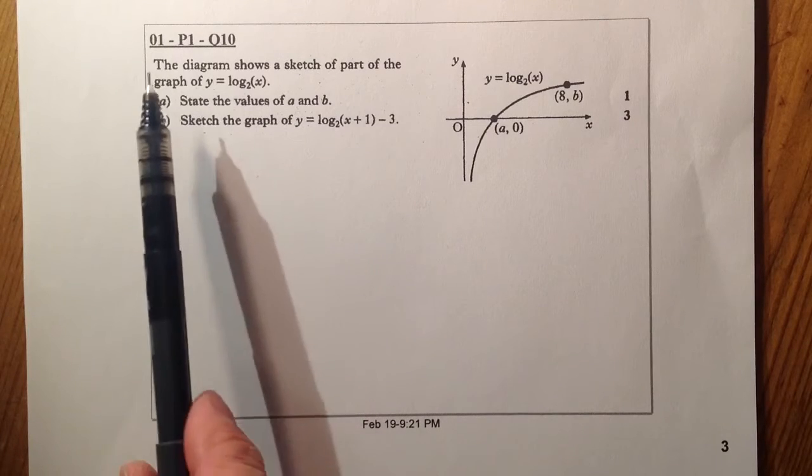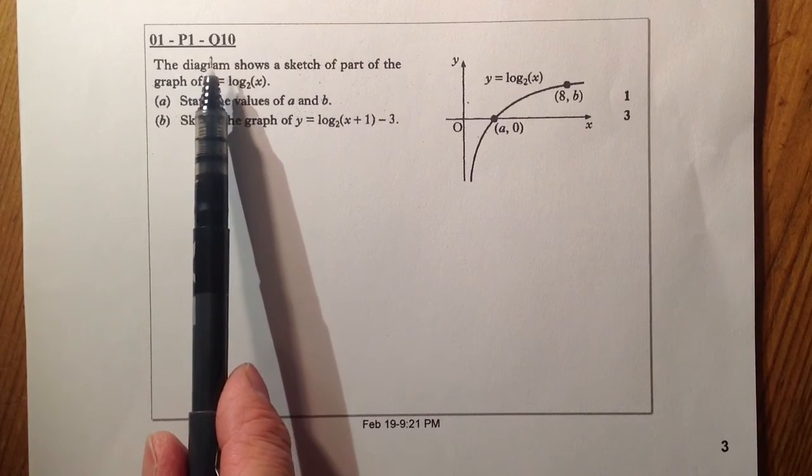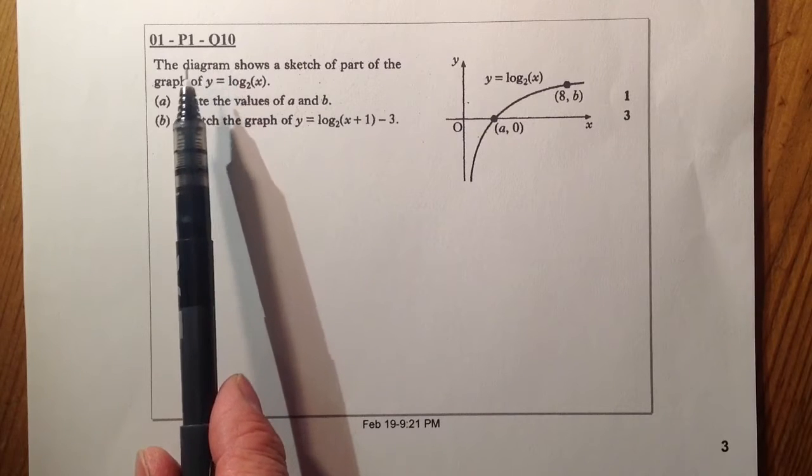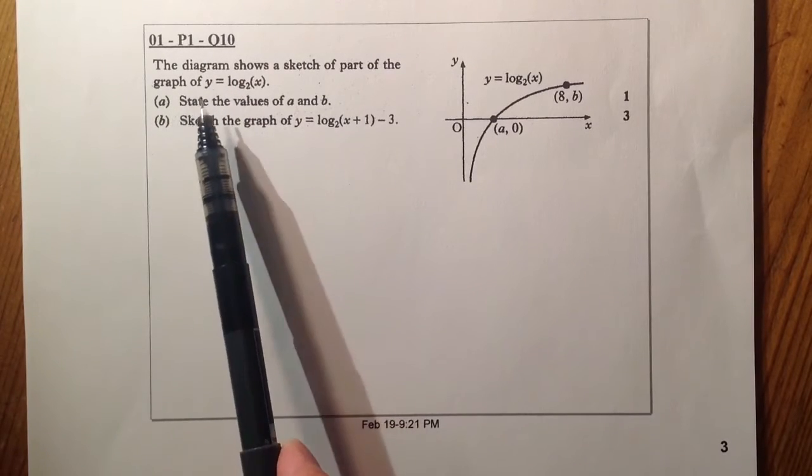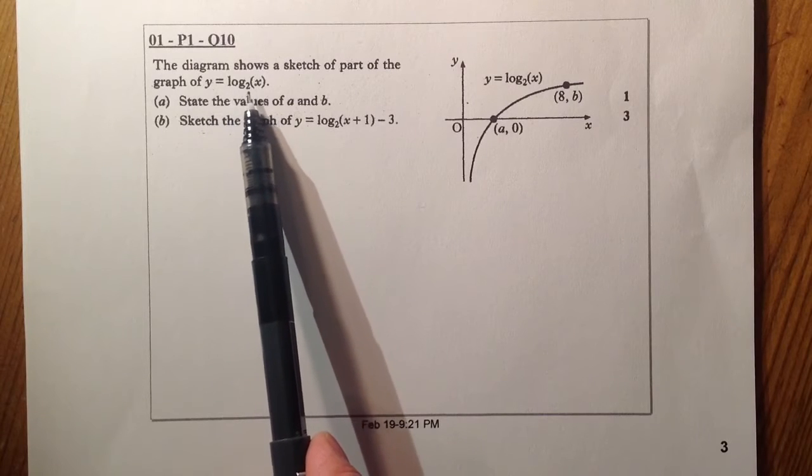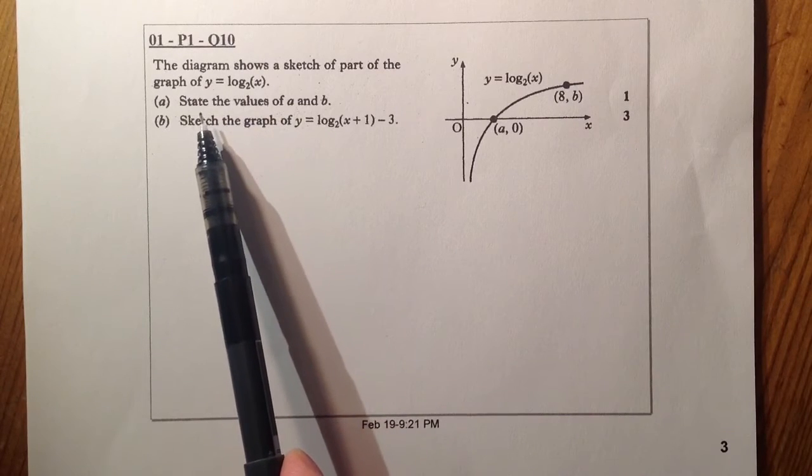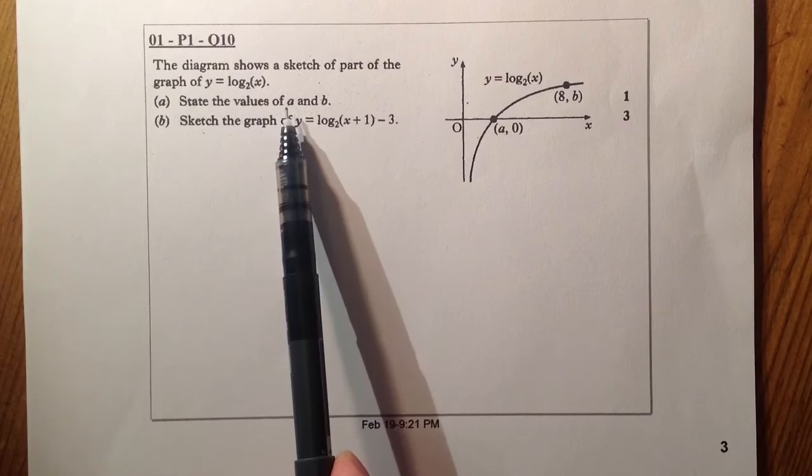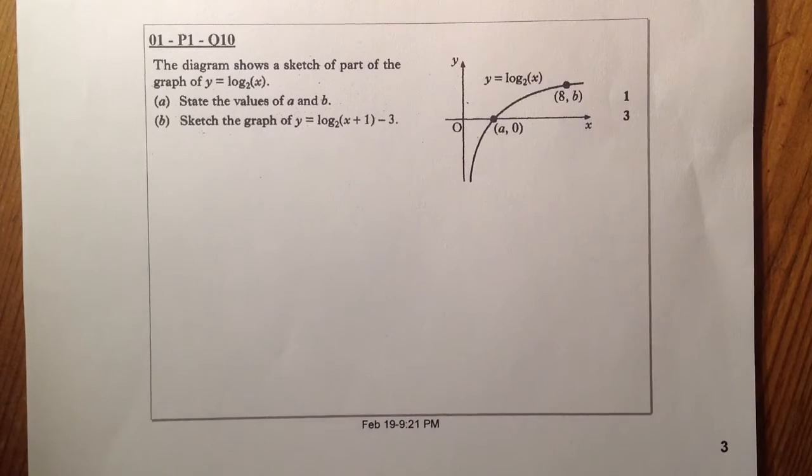This is Higher Maths, the 2001 paper one, question 10 on the past papers. The diagram shows a sketch of part of the graph y equals log x to base 2, and you have to state the values of a and b.